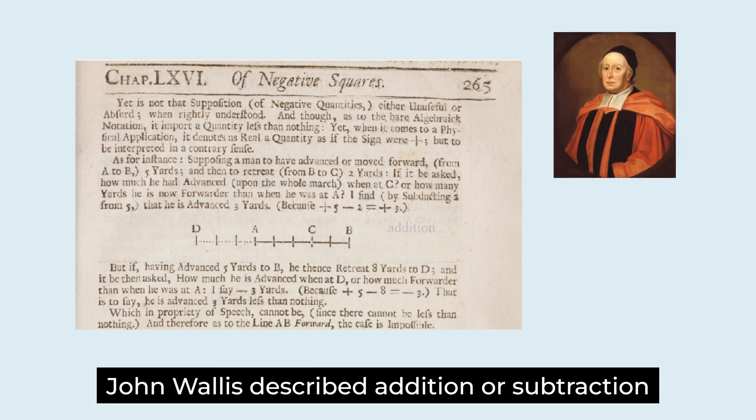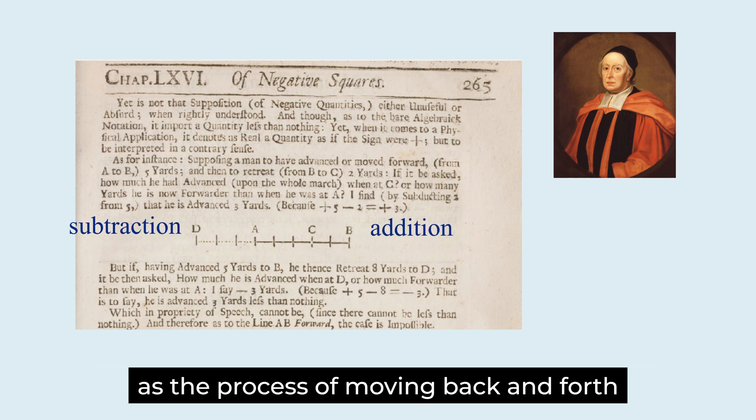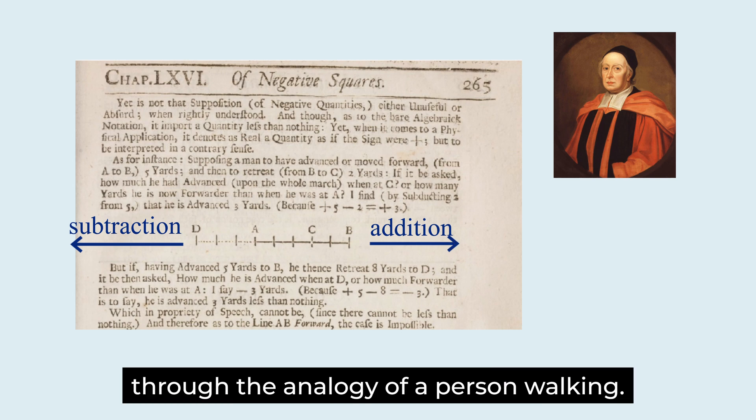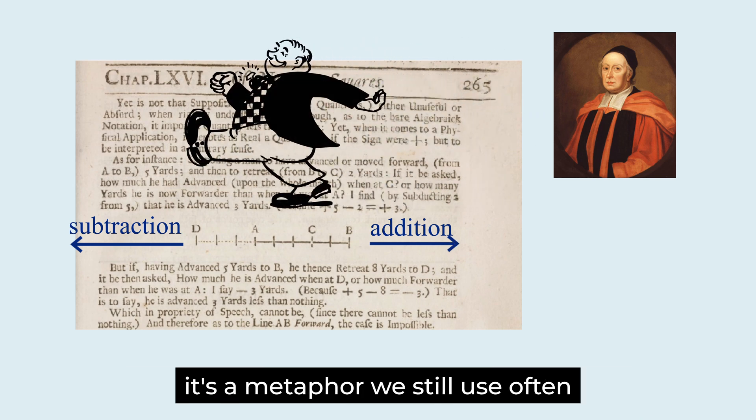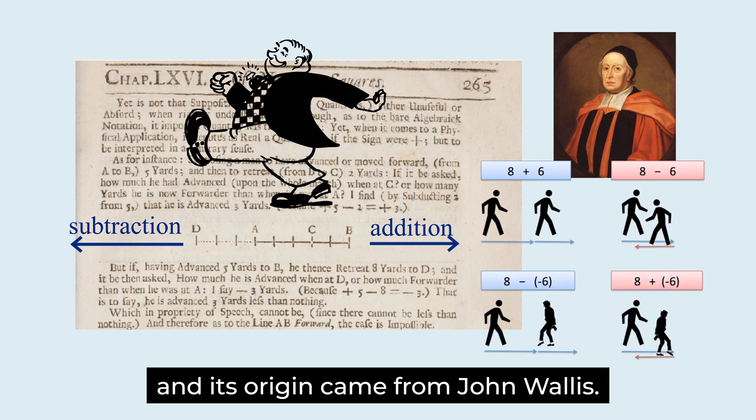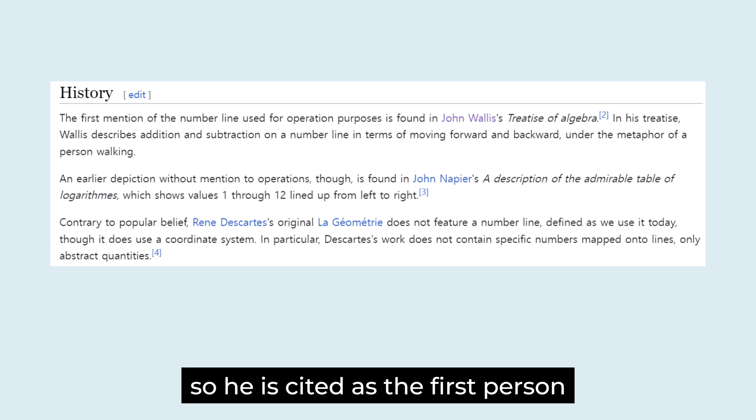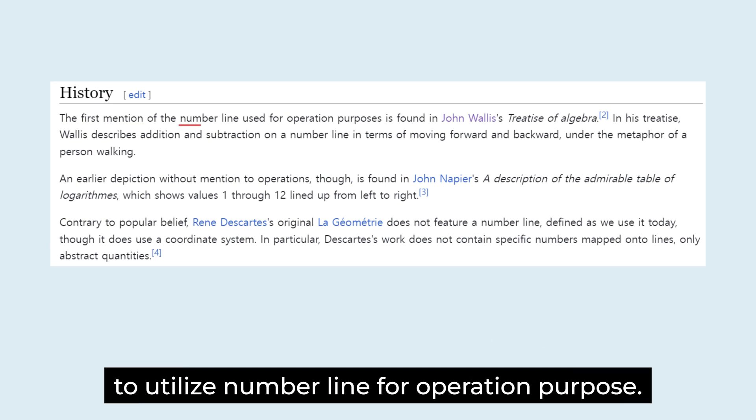John Wallis described addition or subtraction as the process of moving back and forth on a number line through the analogy of a person walking. It is a metaphor we still use often and its origin came from John Wallis. So, he is cited as the first person to utilize number line for operation purpose.